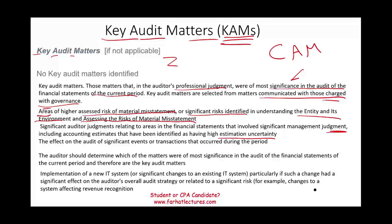Key audit matters can also cover significant events or transactions during the period. We want to tell users what challenges we faced and sometimes how we resolved them. The auditor determines which matters were of most significance using professional judgment, but those items must have been communicated with those charged with governance. They are of most significance in the audit of the current period's financial statements — hence, key audit matters.